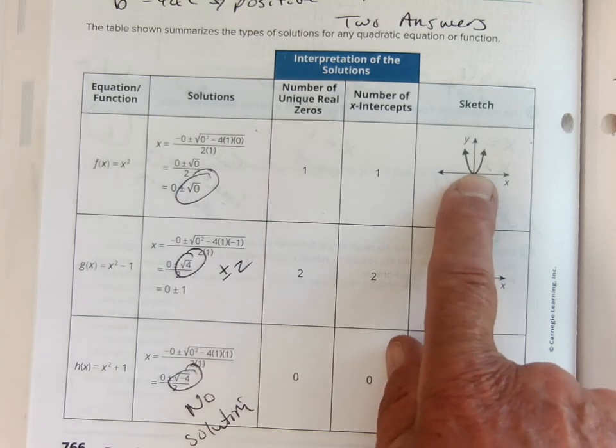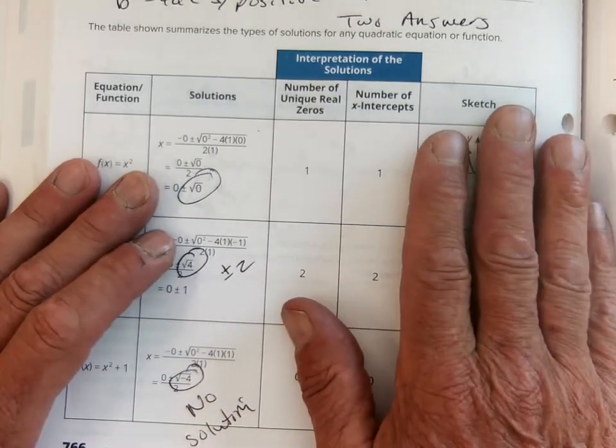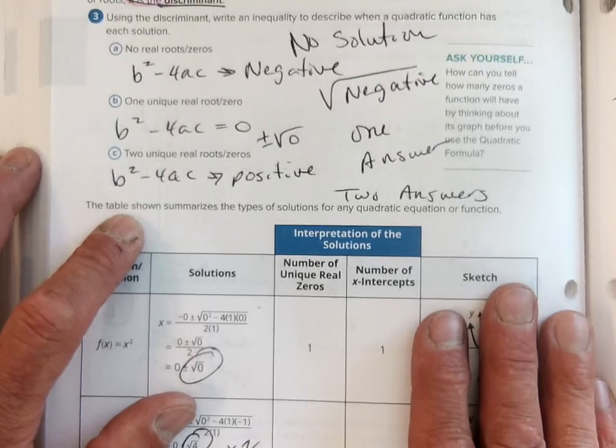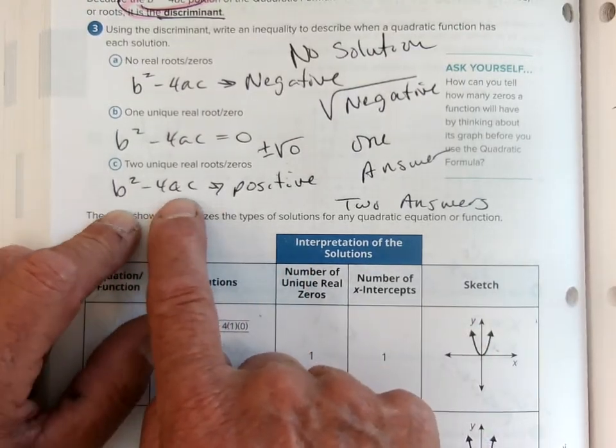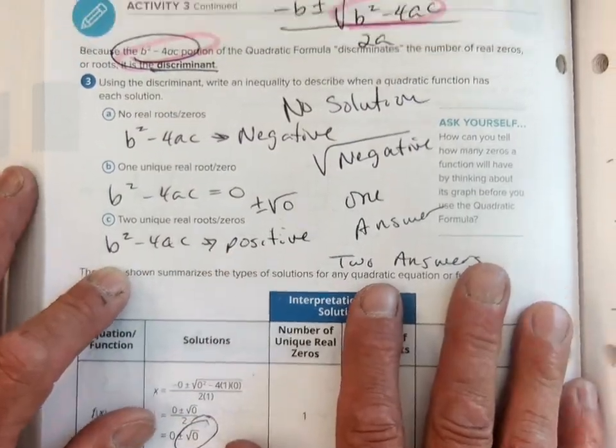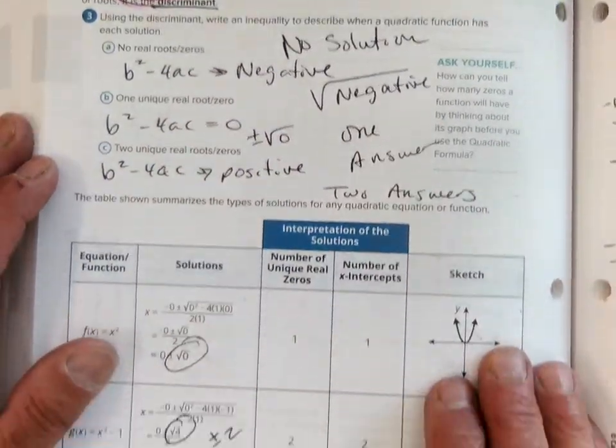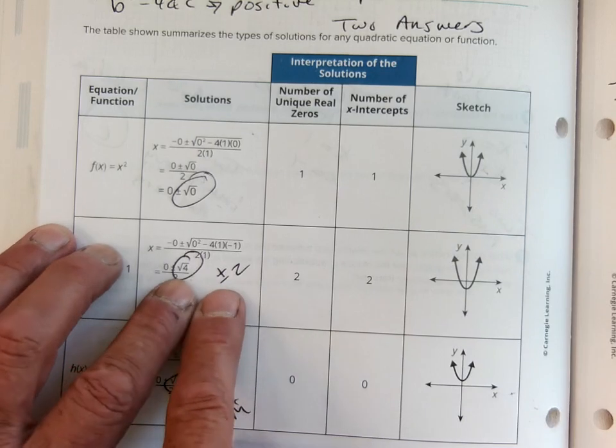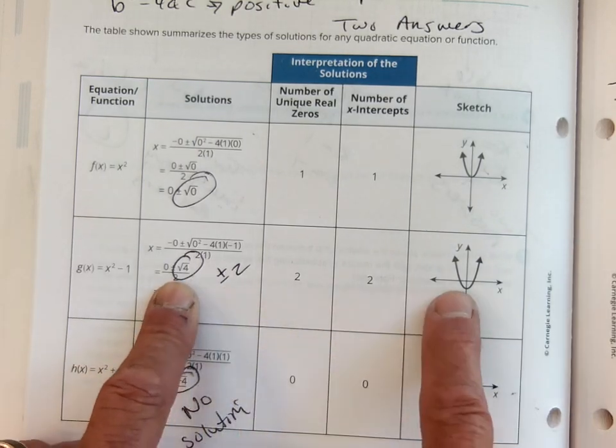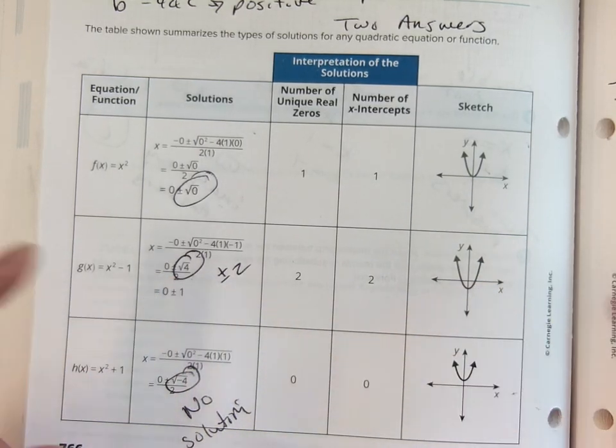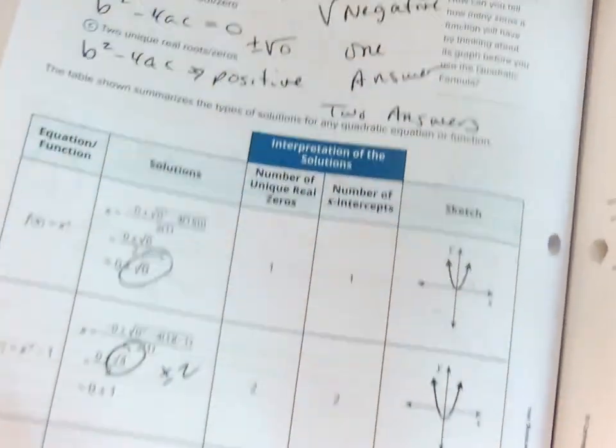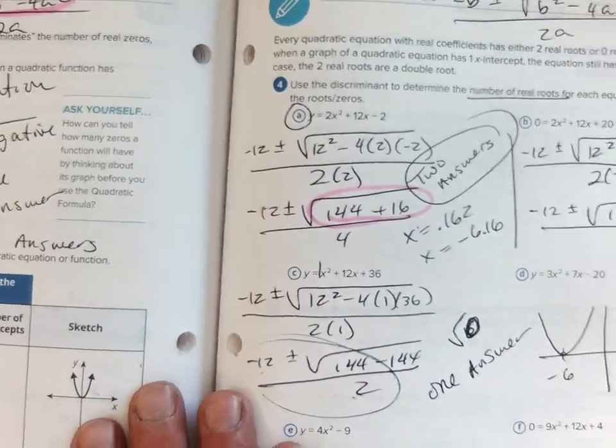And further, if b squared minus 4ac is positive, you're going to take the square root of a positive number, which gives us two answers because of the plus or minus. An example of that is right down here—we took the square root of 4, which is plus minus 2, we do get two answers. So in our work over here on page 767, we did three examples.